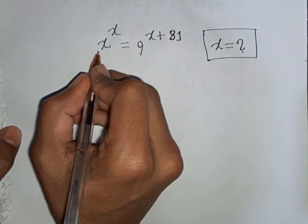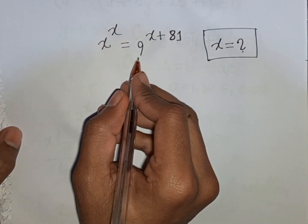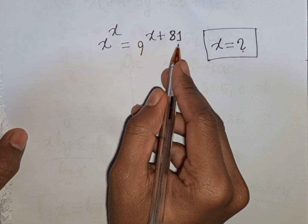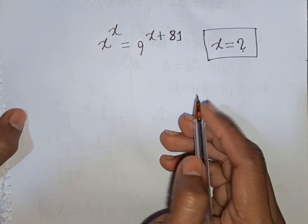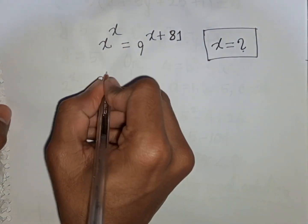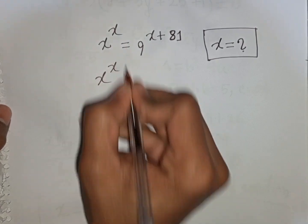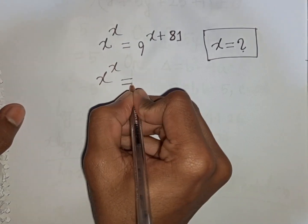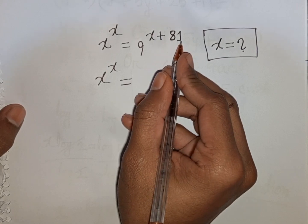How to solve x^x = 9^(x+81). Find the value of x. So we have x^x is equal to 9^(x+81).